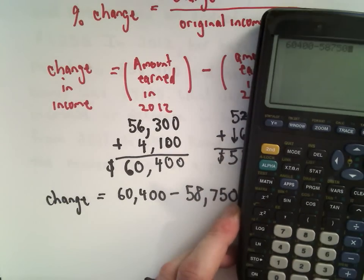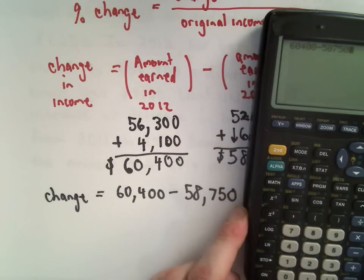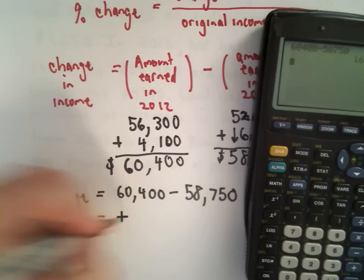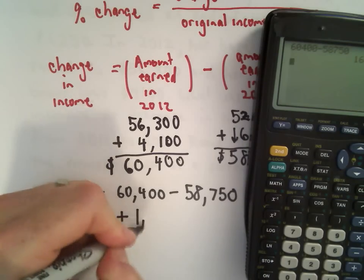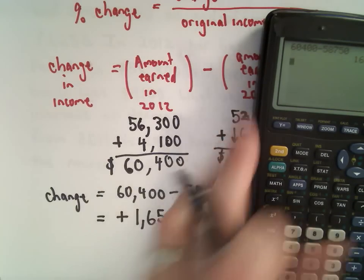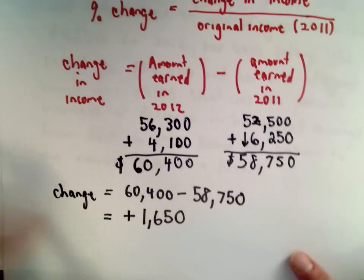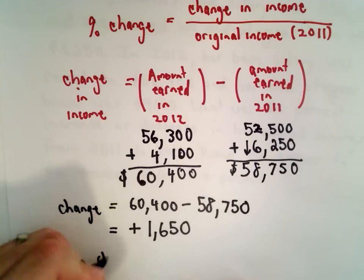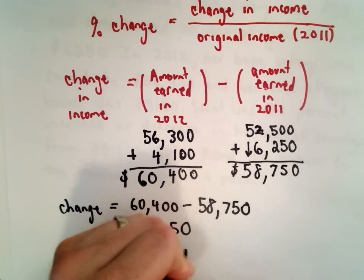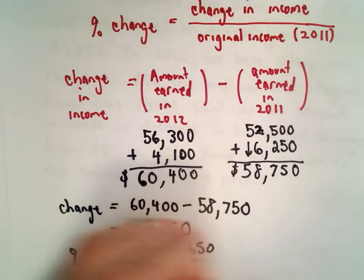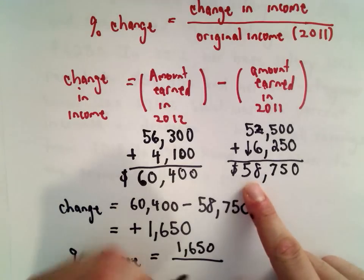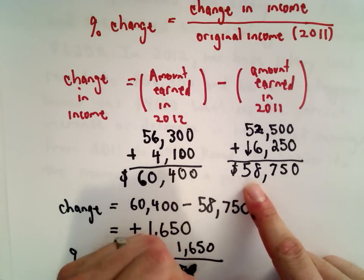So I've got 60,400 minus 58,750. That's a change of, well, her income went up by $1,650. And now to figure out the percent change, I'm just going to use my original formula up here. So the percent change, that's going to be the $1,650 divided by her original income in 2011. We said that was $58,750.